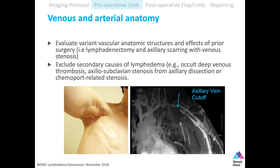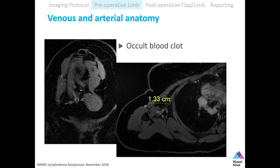Here is a patient with extensive axillary scarring — you can see the axillary vein is occluded. This was very helpful for planning; when Joe did the surgery, he knew to also plan a venous procedure to allow proper venous drainage of the extremity, in addition to the vascularized lymph node transfer flap. Here's a case from a week or two ago: a patient with an occult thrombus within the distal axillary vein, stenosis in the axilla causing slow blood flow, and this occult thrombus. We talk regularly so the patient can be started on anticoagulation.